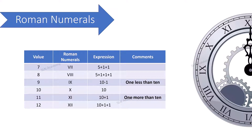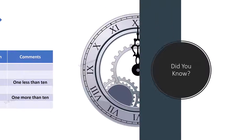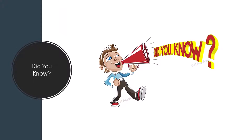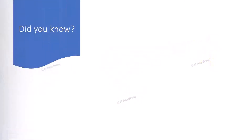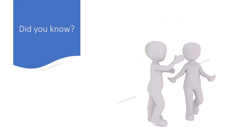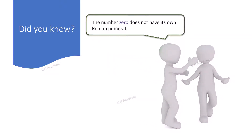These notations are like a finger count sequence. Did you know which is the only number that cannot be represented by Roman numerals? The number zero does not have its own Roman numeral, but the word 'nulla,' which means 'none,' can be used to refer to it.